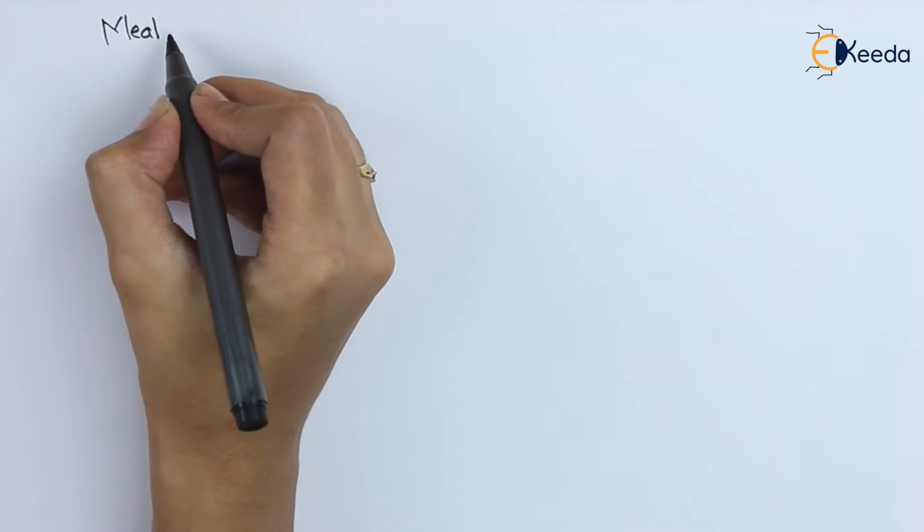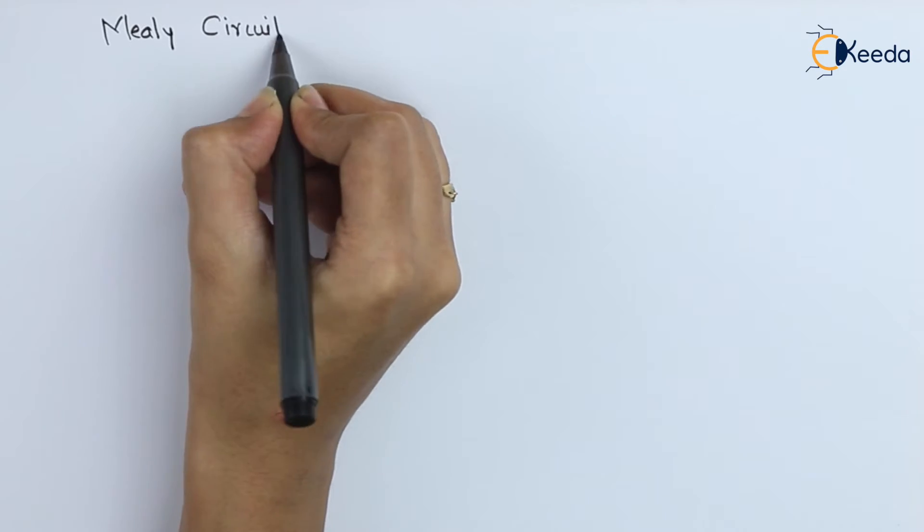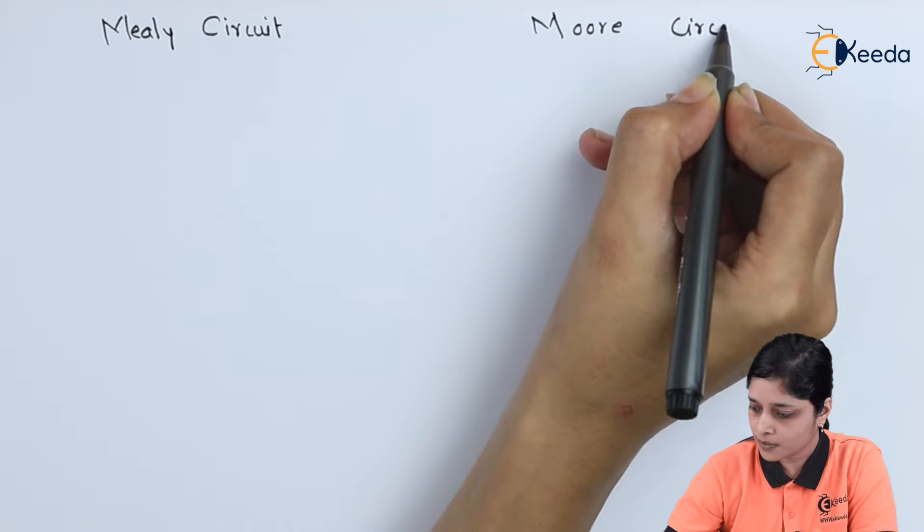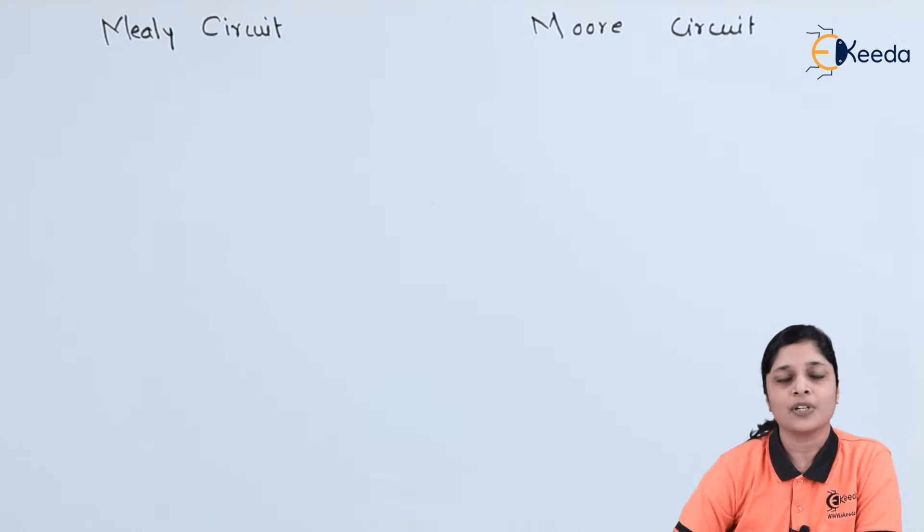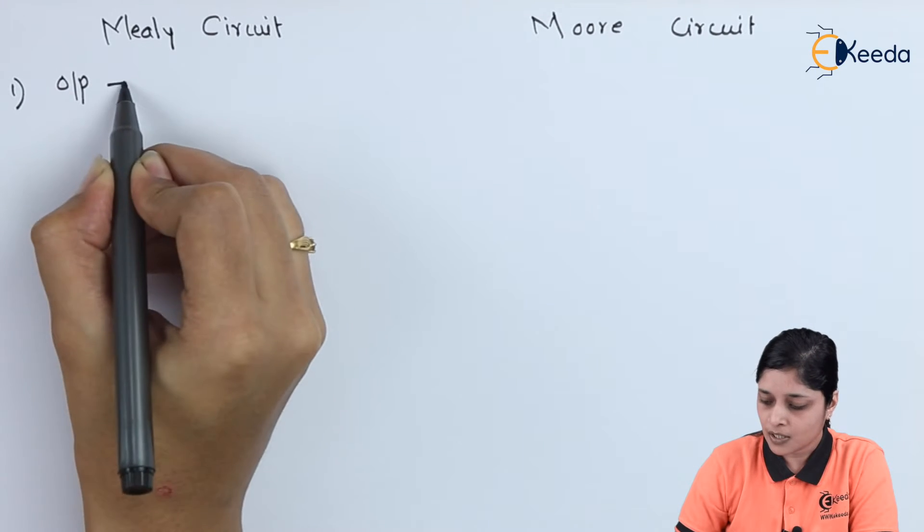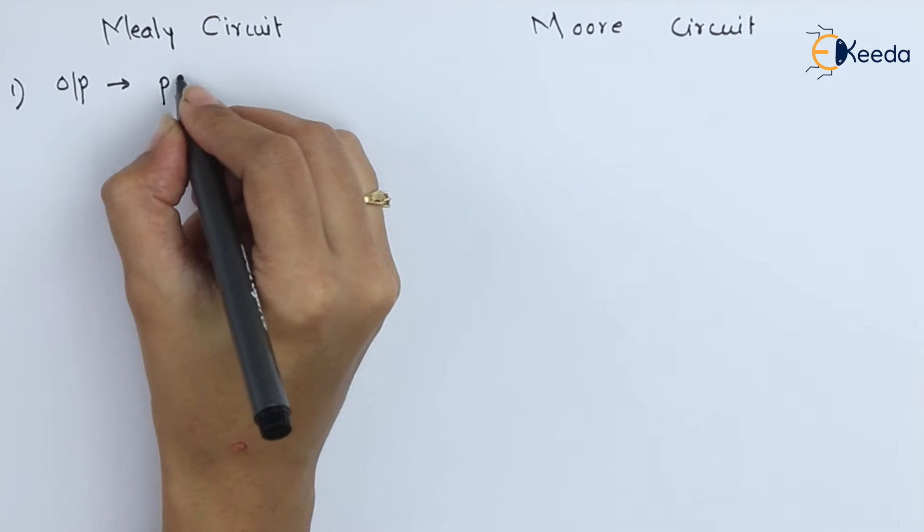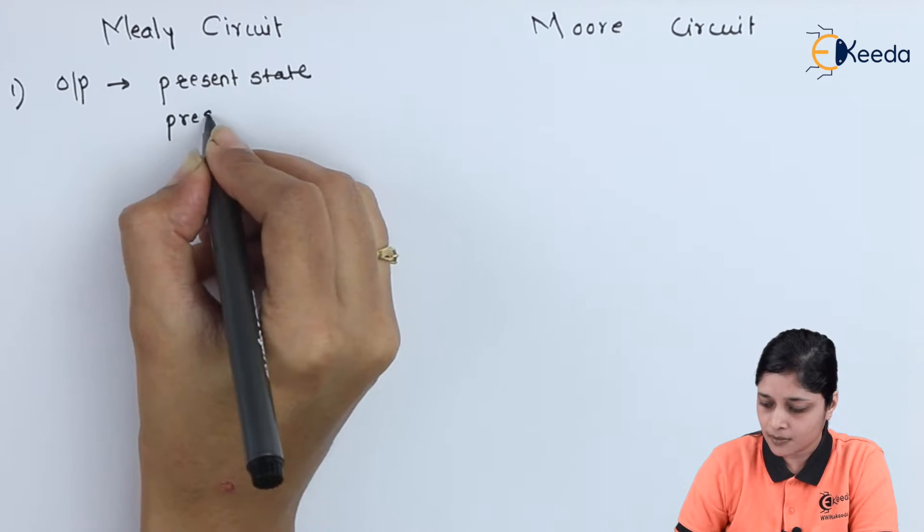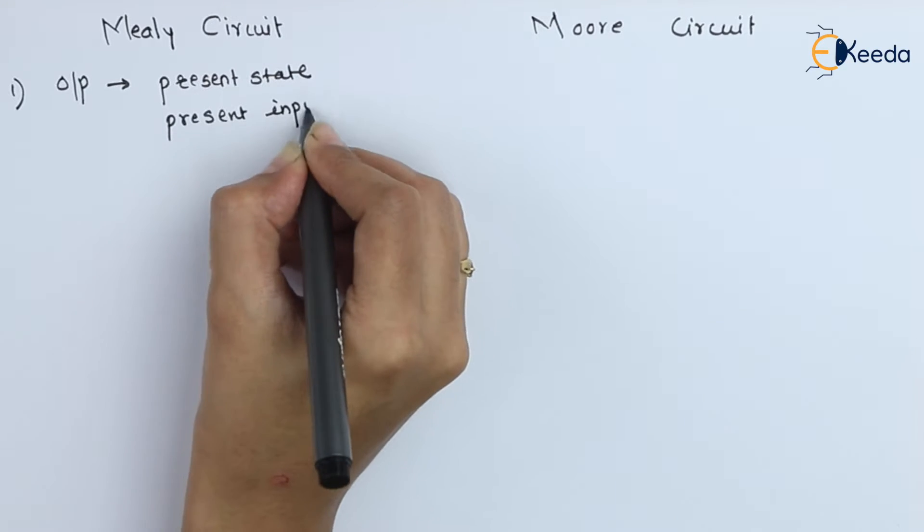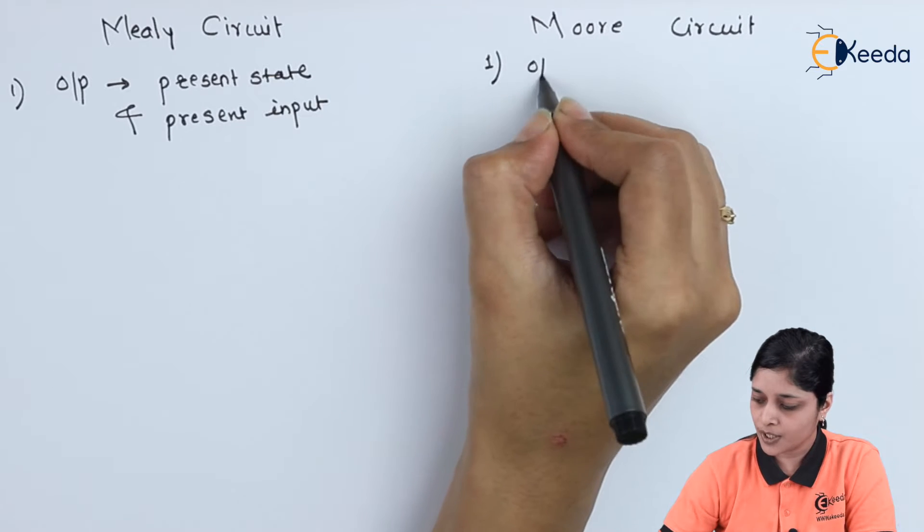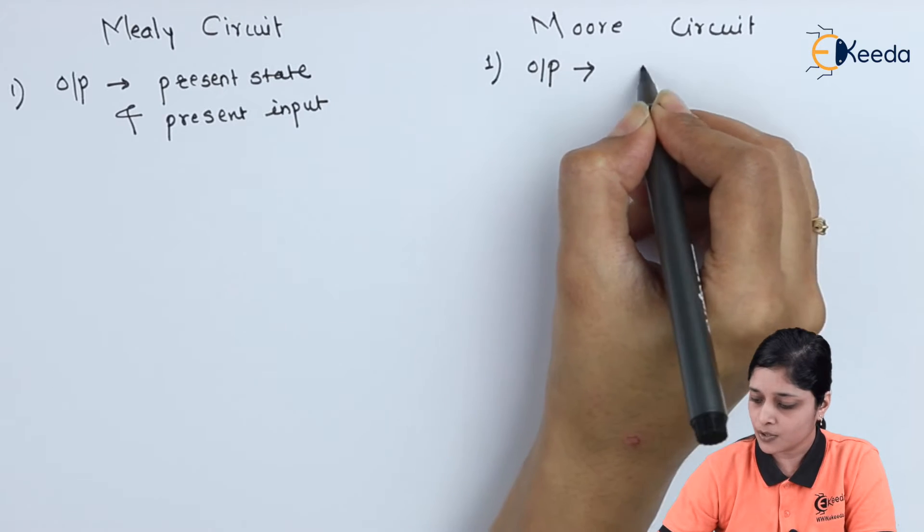So we have on one side Mealy circuit and on another side Moore circuit. The first point we can discuss about the Mealy circuit is output depends on present state and present input. Here in Moore circuit, the first point we can quote is output depends only on present state.